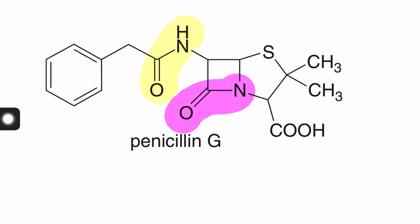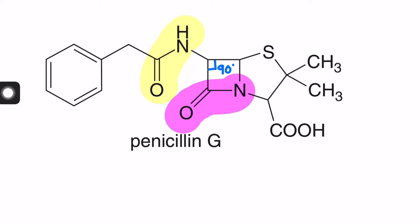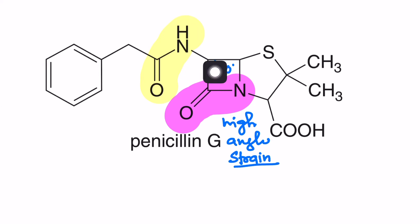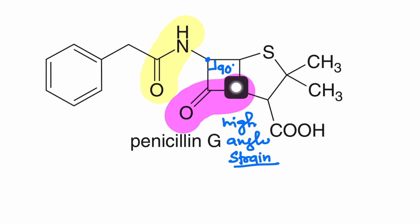It's very simple. If you see, this amide is the part of a four-membered ring. This is present inside a four-membered ring, and it has a bond angle of approximately 90 degrees. And due to that, it will have high angle strain. There will be high angle strain, making this amide — which is present inside the ring — more reactive.